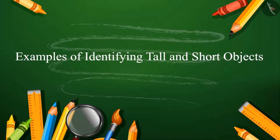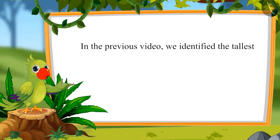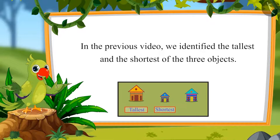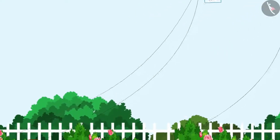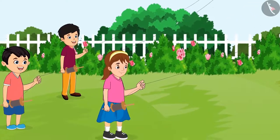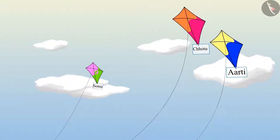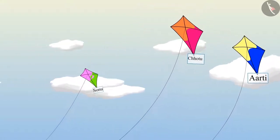So children, in the last video, we identified the tallest and the shortest of the three objects. In this video, we will see examples of identifying tall and short objects.